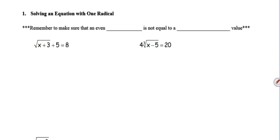What you do want to make sure is to remember that if there is an even index—square roots, fourth roots, sixth roots, etc.—that it's not going to be equal to a negative value. Because again, we're taking principal values, which are positive. So if you ever get an even index equal to a negative value, that's going to be no real solution.